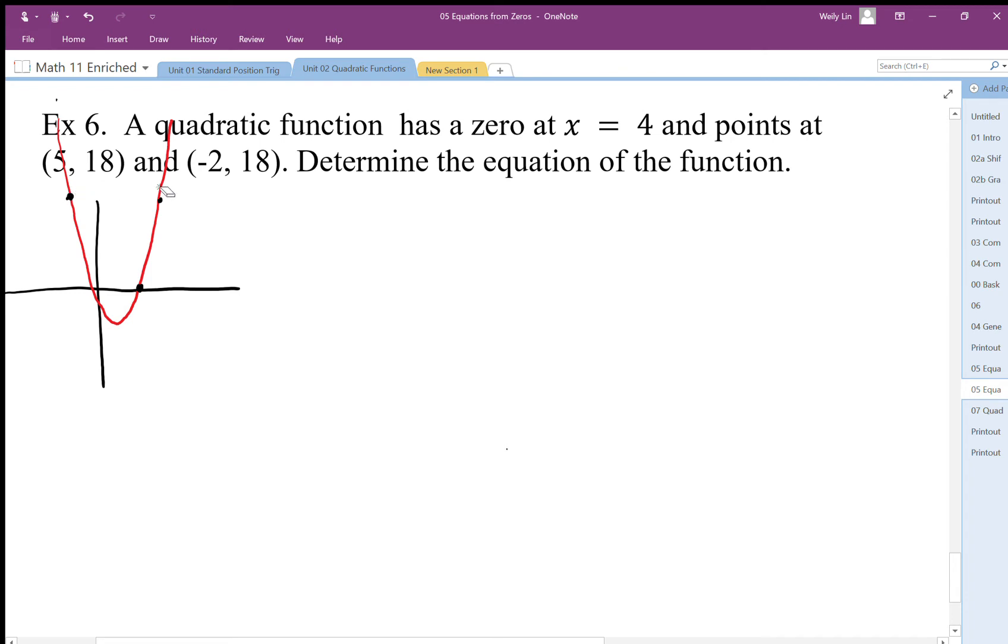At (-2, 18) and (5, 18), these are symmetrical points, so we should be able to find a line of symmetry. That line of symmetry is going to be halfway between those points. If I want to find the middle, I take the average of those two x coordinates, so the average is going to be 1.5.